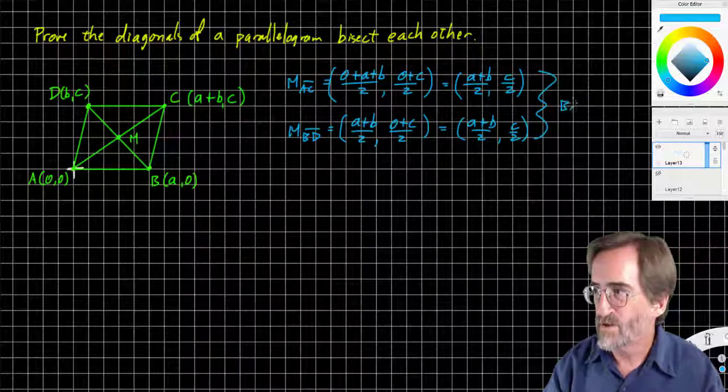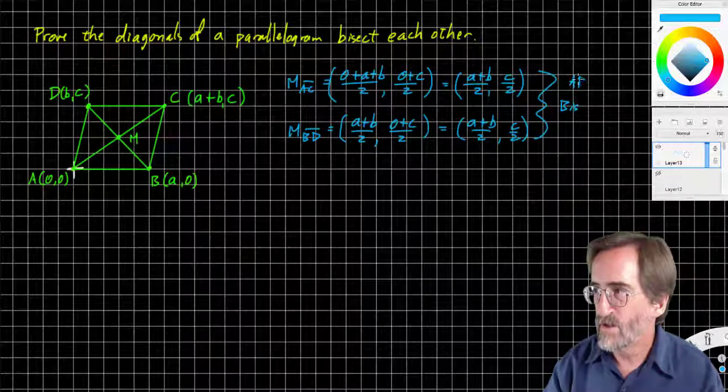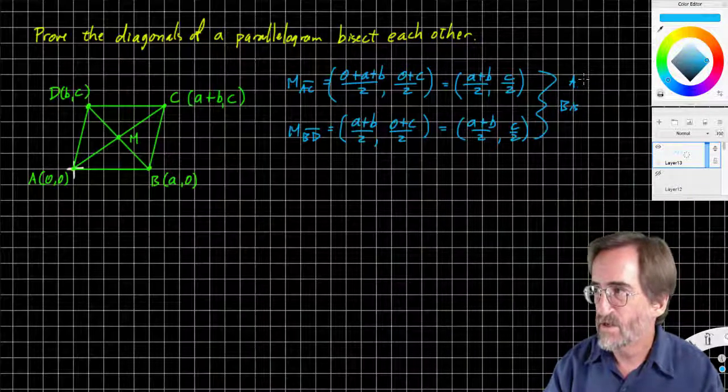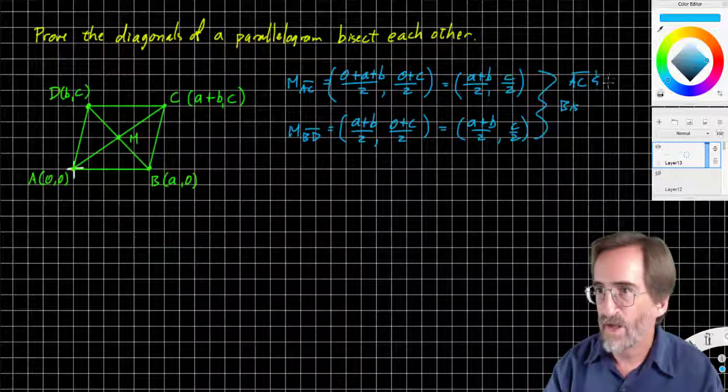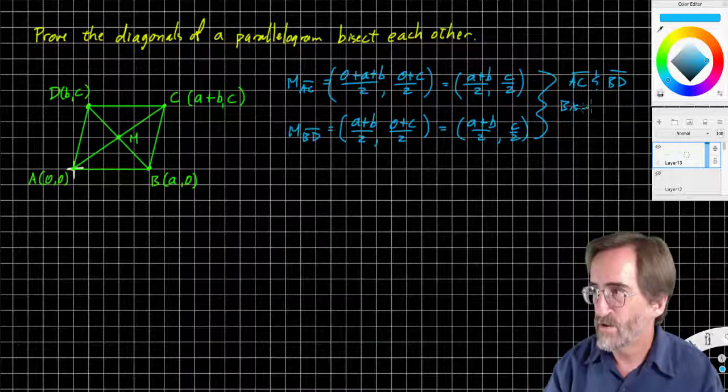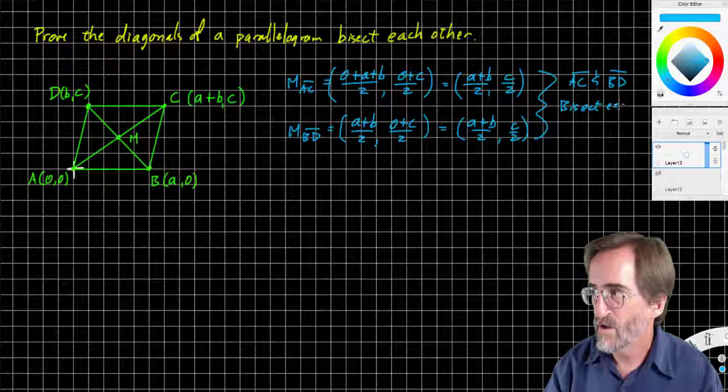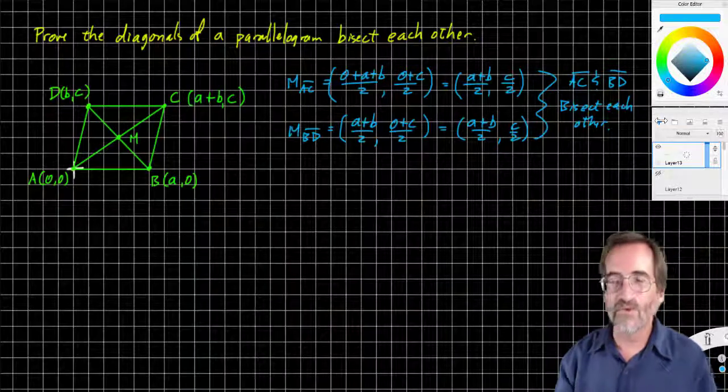They both have, or c divided by two. Zero plus c is c. And so they both have the same midpoint. Therefore, they bisect each other. So a, b, a, c, and b, d bisect each other. And we've proven it.